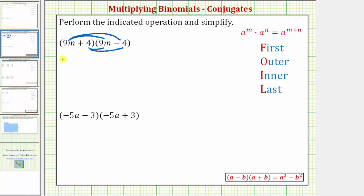For this first example, let's write out each product. So we first have 9m times 9m plus 9m times negative 4, now we distribute the 4, 4 times 9m, and then finally plus 4 times negative 4. Multiplying using the acronym FOIL, we do get the same products.